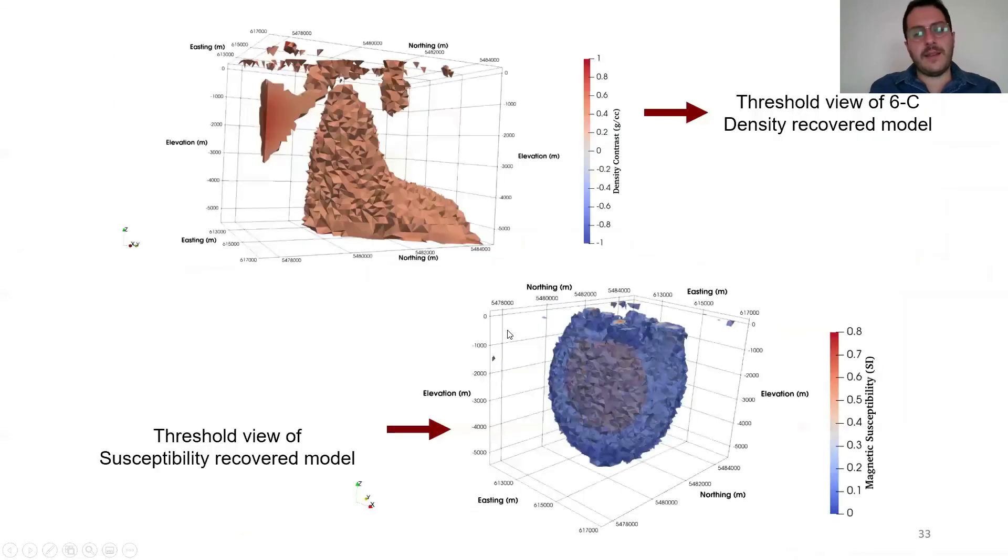Here is the recovered model, the susceptibility recovered model result for the airborne total magnetic field data. Figure A and B show the cross-section views. Figure C shows the threshold view of the susceptibility model. For clarity, we removed the cells below 0.15 SI units. Overall, if we look at the inversion result of each data, we can see that the location and the depth of the intrusion had consistency. But the susceptibility recovered model has a wider structure here. This is probably because of the line spacing that was used for the survey.